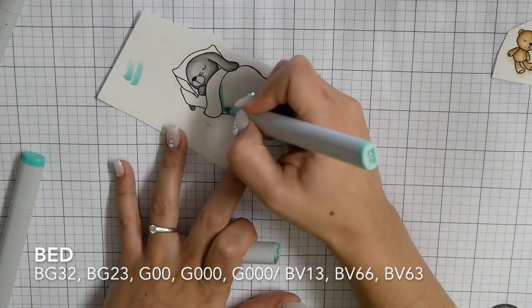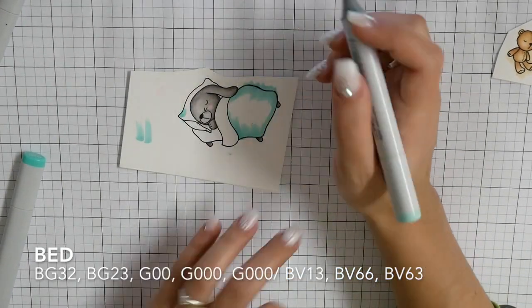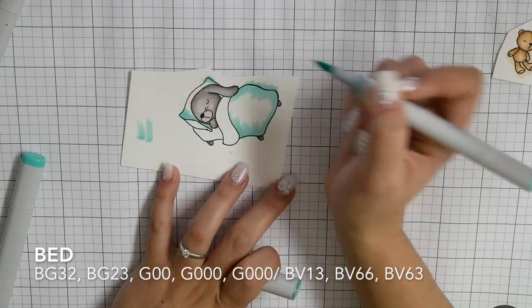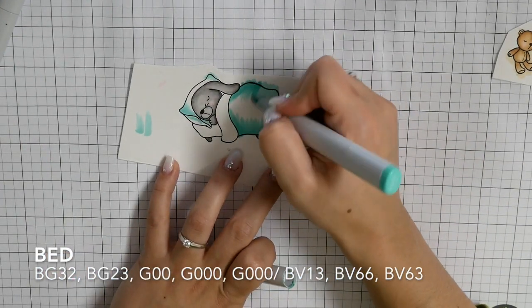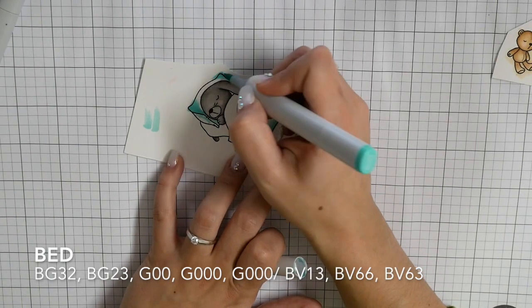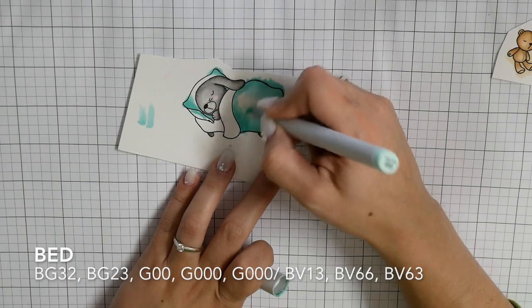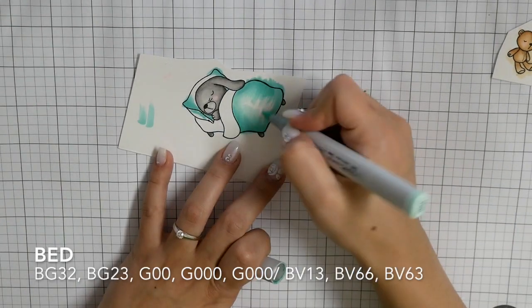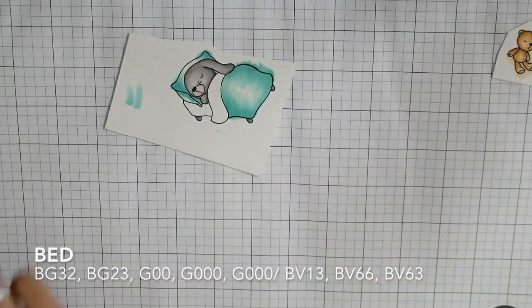And for the bed I am using BG32, BG23, G00, G000, and also BV13, BV66, and BV63.